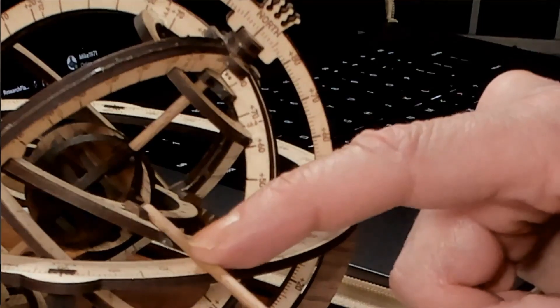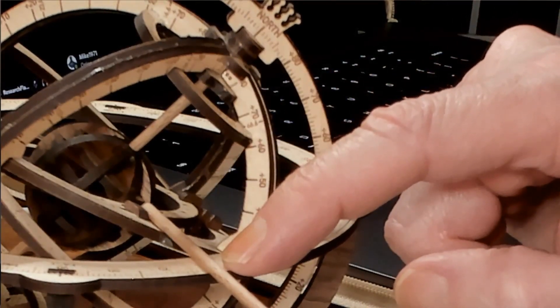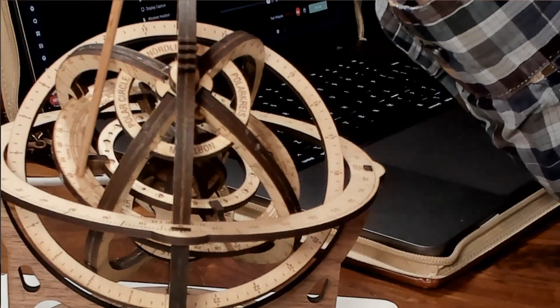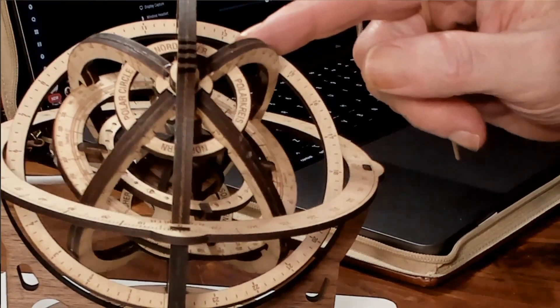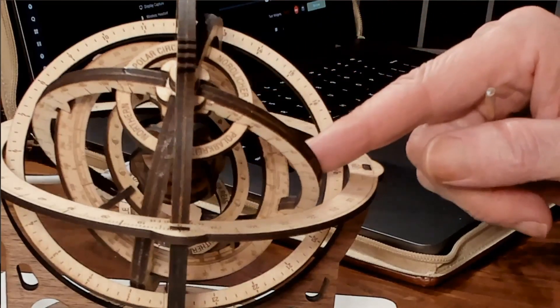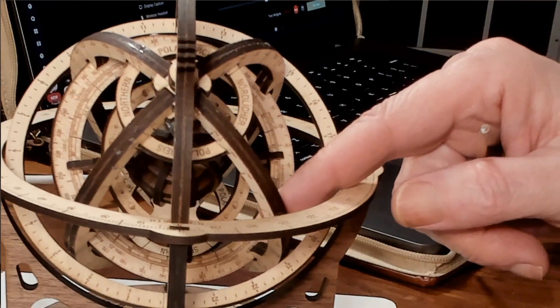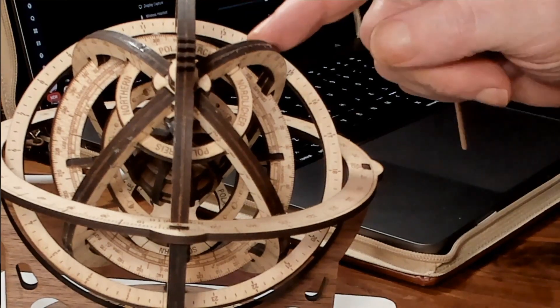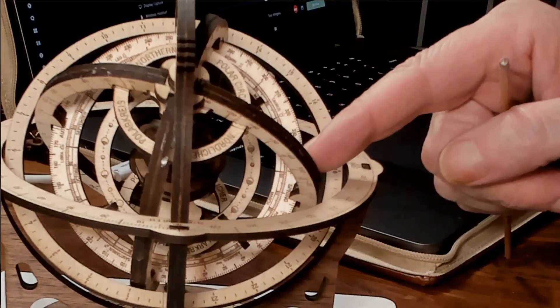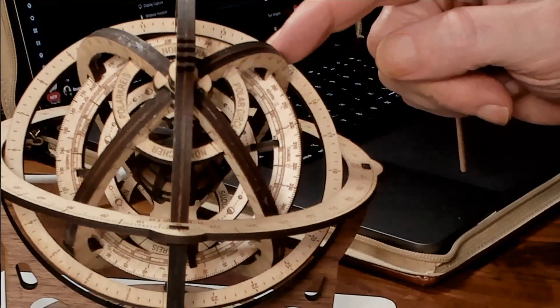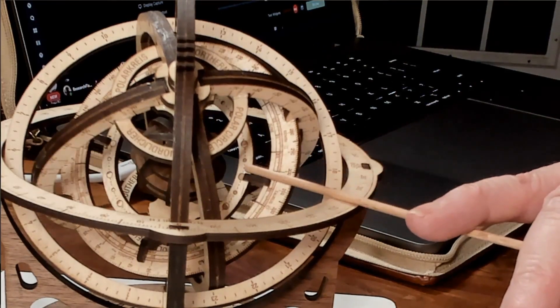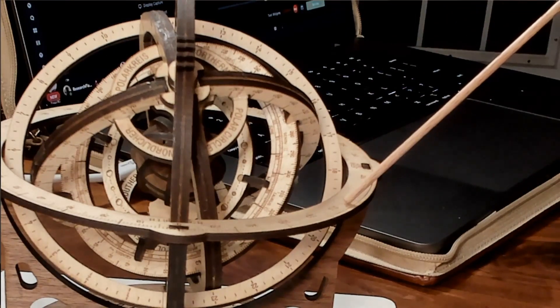Now once we have this lined up, we can tell the direction to sunrise, and we can also tell the time to sunrise by reading off the timeline right here. Here is the position of the sun at dawn on the 16th. As the day goes on, we rotate the ecliptic from east to west. Here is the position of the sun at noon. And then down here we have sunset right there. And again we can tell the direction of sunset from here.